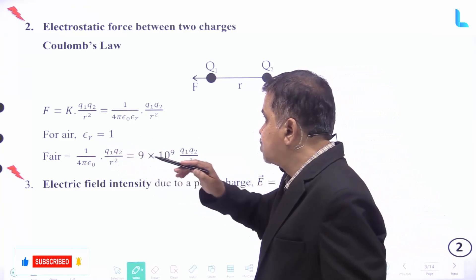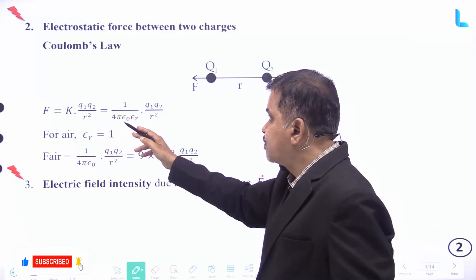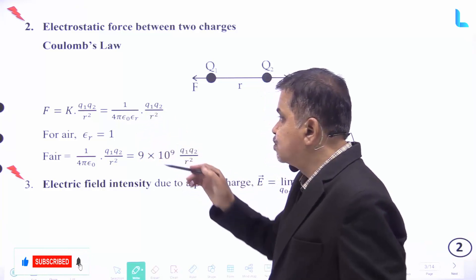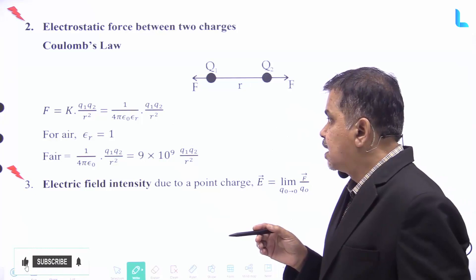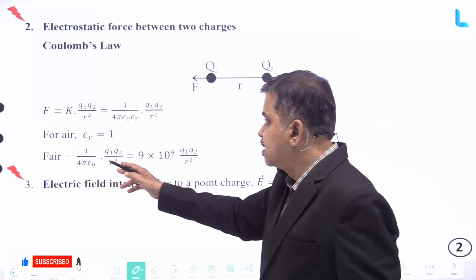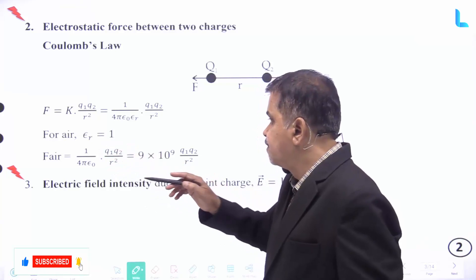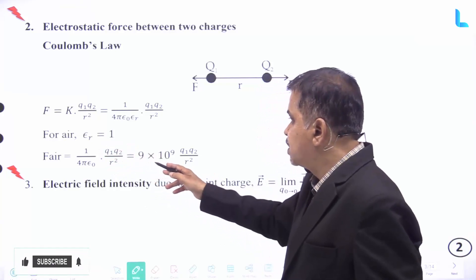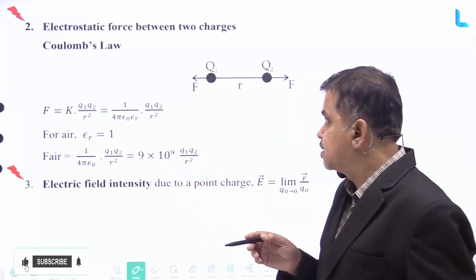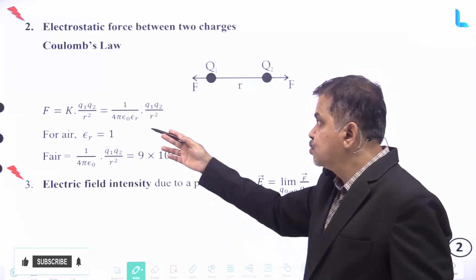For air, epsilon naught r equals one, so we can write F equal to 1 by 4 pi epsilon naught into Q1 Q2 divided by r square. Therefore F for air is given by 9 into 10 to the power 9 into Q1 Q2 divided by r square. This is known as Coulomb's Law.